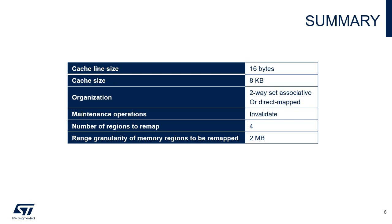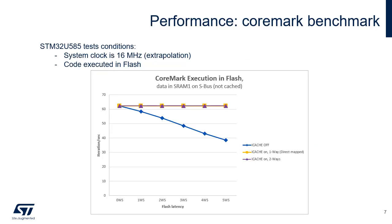The address remapping is applied on the code alias address, transforming it into the external physical destination address. The minimum region size is 2 megabytes and the maximum size is 128 megabytes. In this chart, the performance in direct mapped and two-way set associative modes is the same. The reason is that the entire benchmark fits into the iCache.